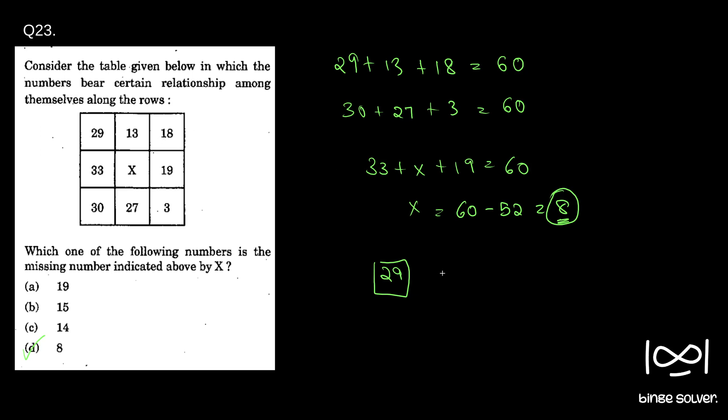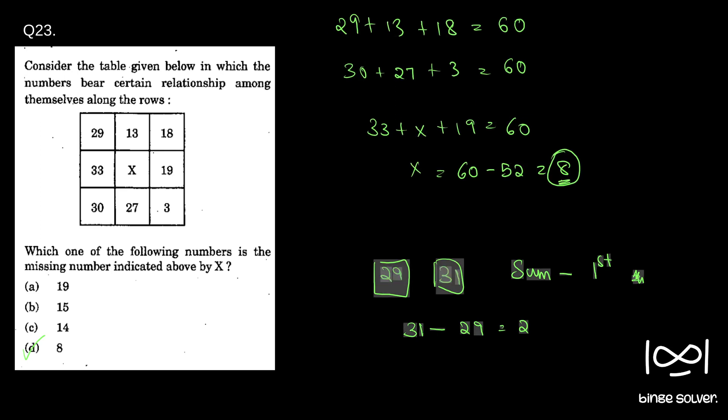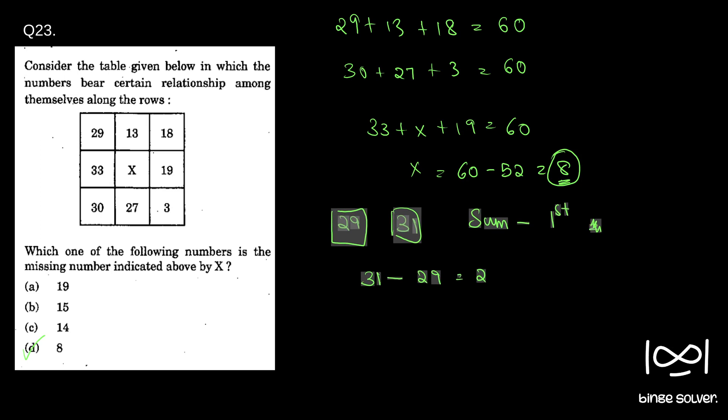So sum minus first element, we will get 31 minus 29. So that is, if you take sum minus first, you'll get 31 minus 29 equal to 2. Okay, let me just move all this. Sorry, it is 31 minus 29 is equal to 2.